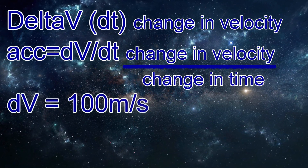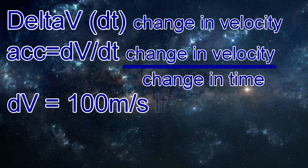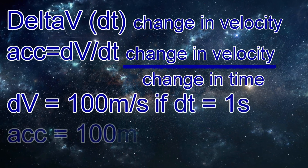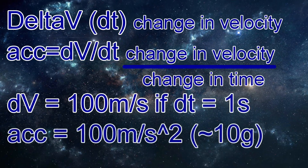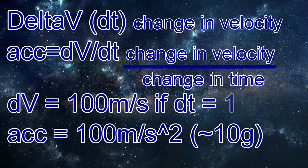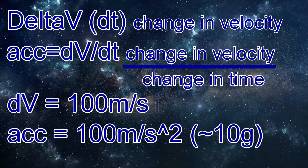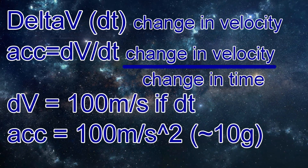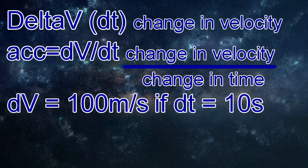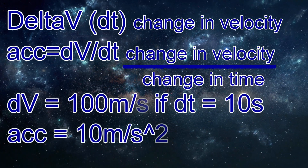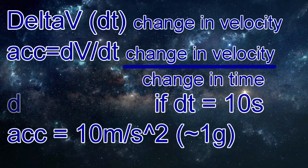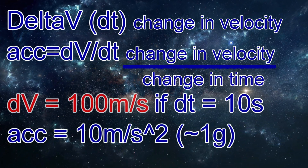If your rocket went from 100 meters per second to 200 meters per second, the delta V is 100 meters per second. If the rocket did this in one second, the acceleration is 100 meters per second squared, or about 10 G's. If the rocket made this change over 10 seconds, then the acceleration is only 10 meters per second squared, or about 1 G. The delta V doesn't change.